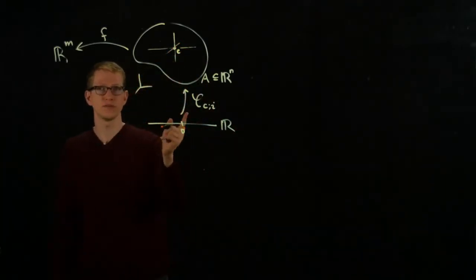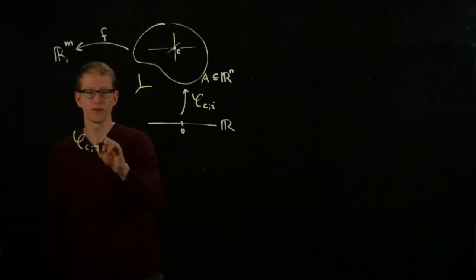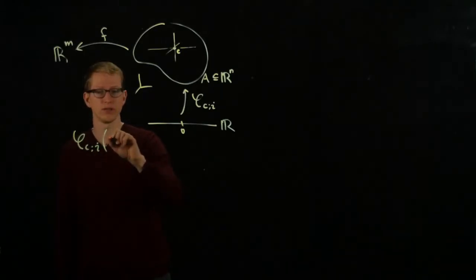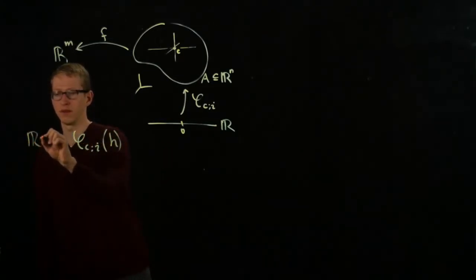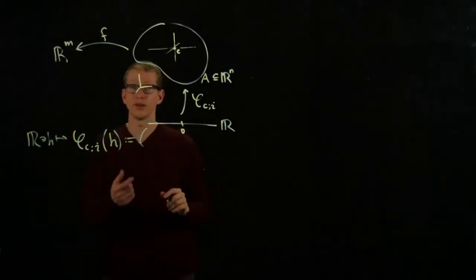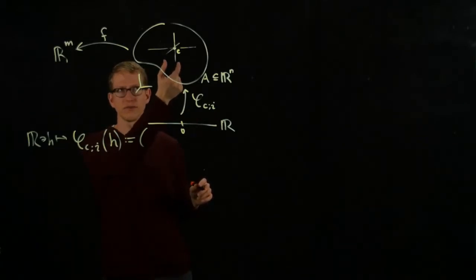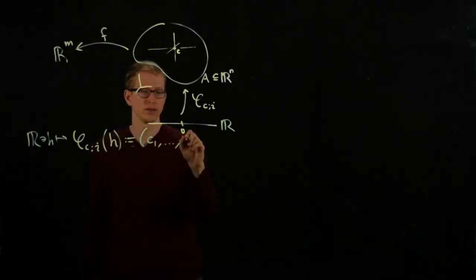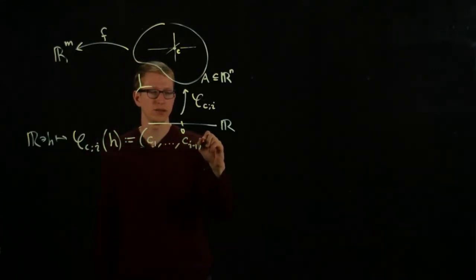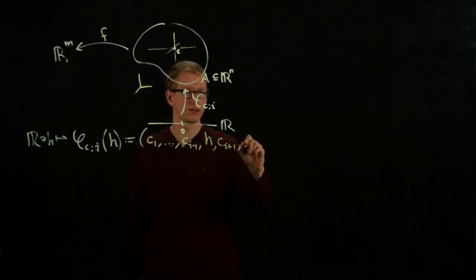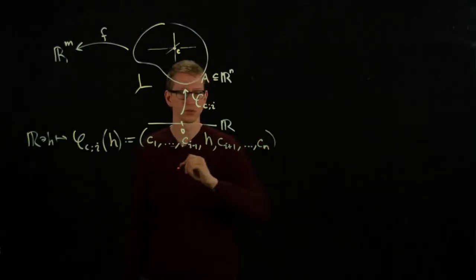The definition of this function at the point H sends H in R to the point—it's going to send everything to the value C except the i-th coordinate. So it goes to (C_1, ..., C_{i-1}, H, C_{i+1}, ..., C_n), since we're in n dimensions.